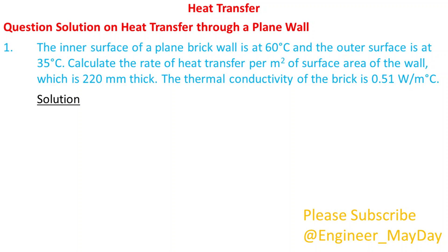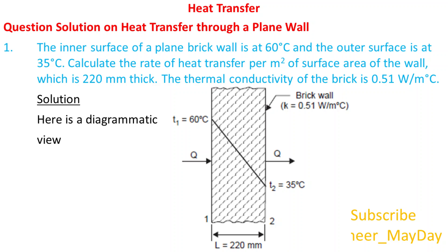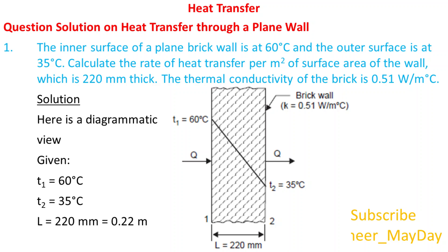Solution. Here is a diagrammatic view. Given: Temperature T1 equals 60 degrees Celsius. Temperature T2 equals 35 degrees Celsius. Length L equals 0.22 meters. Thermal conductivity K equals 0.51 watts per meter per degrees Celsius.